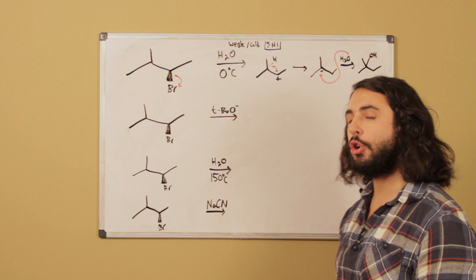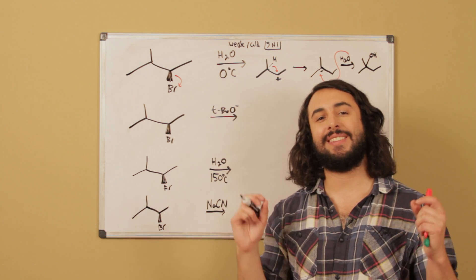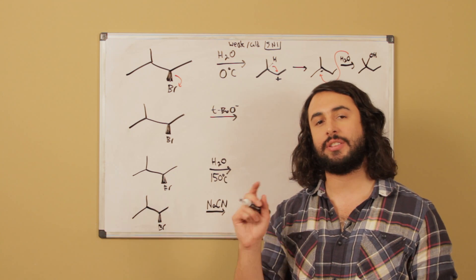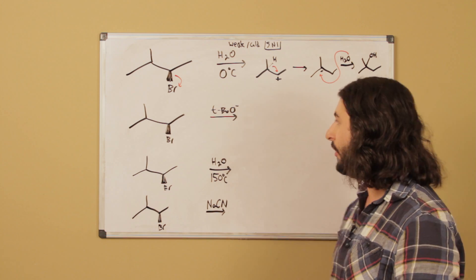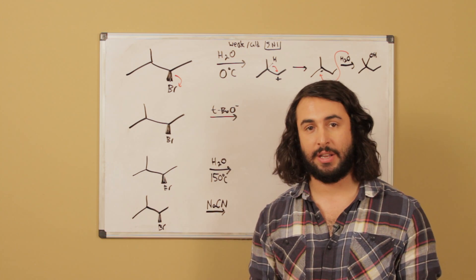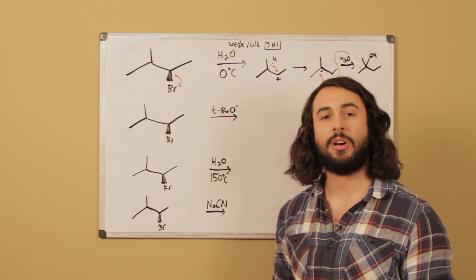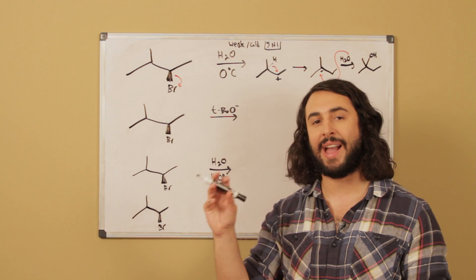Now let's go ahead and look at the next one here. Tert-butoxide, that is our dead giveaway E2. We know that tert-butoxide is always going to do E2. That is because it is a very strong base so it has the capacity to push this molecule around. It's going to do something, it's going to react.